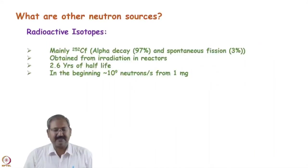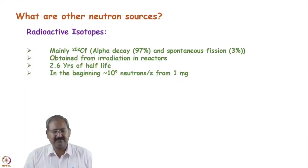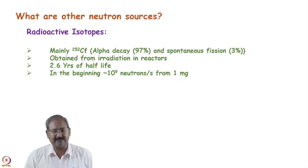When we are talking about the spallation neutron source, this accelerator is used for getting the neutrons. What are the other neutron sources? Very small scale neutron sources consist of some natural radioactive isotopes and some artificially created radioactive isotopes, naturally used by Rutherford in his experiment.